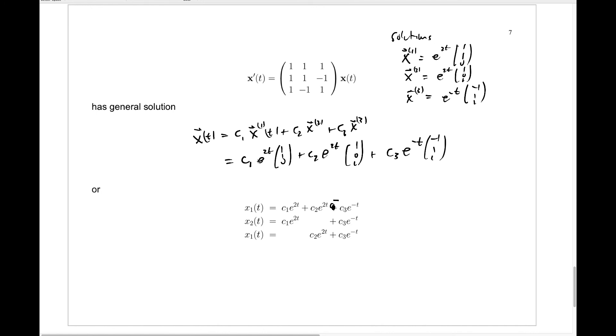x2 of t, the second component, gives us c1 e to the 2t times 1 plus c2 e to the 2t times 0, so I've left that one out, plus c3 e to the minus t times 1. So you have this plus that. And finally x3 of t—that should be x3 of t, not x1 of t—that third component will have 0 times this first piece plus 1 times that second piece, c2 e to the 2t, plus 1 times the third piece like that.